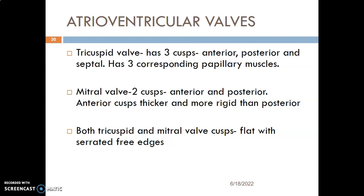The atrioventricular valves are between the atria and the ventricles. The tricuspid valve has three cusps — anterior, posterior, and septal — corresponding to the papillary muscles attached via chordae tendineae. The mitral valve is bicuspid with anterior and posterior cusps; the anterior cusp is thicker and more rigid than the posterior. Both tricuspid and bicuspid valve cusps are flat with serrated edges.